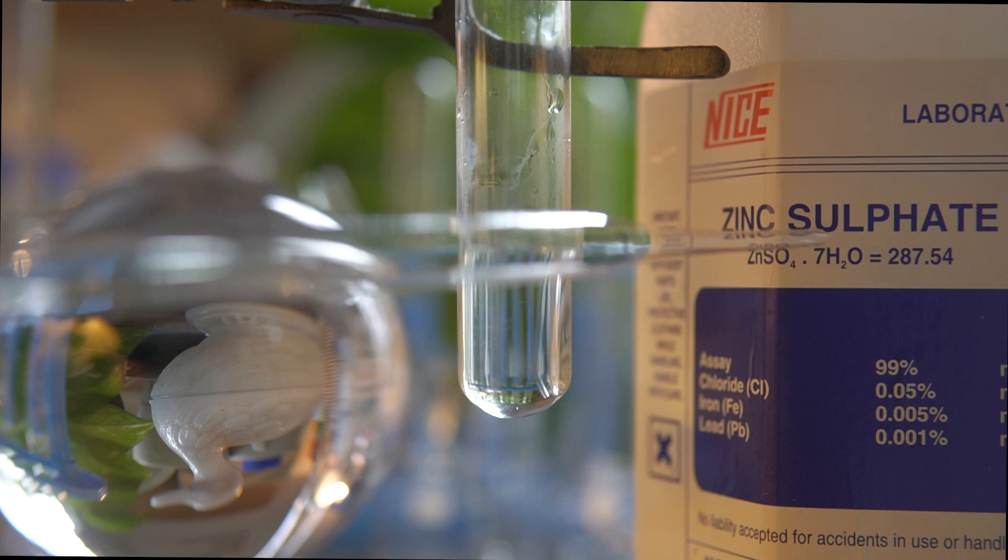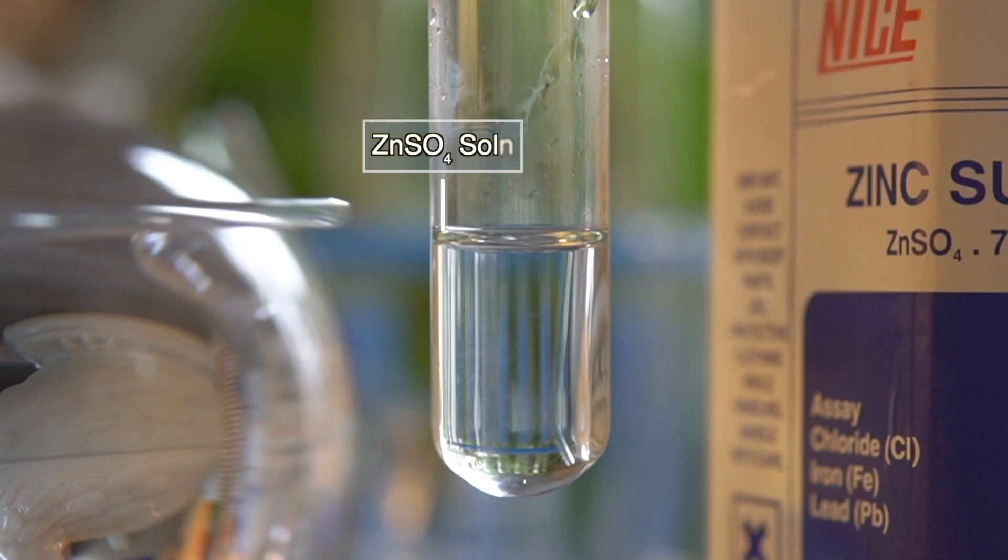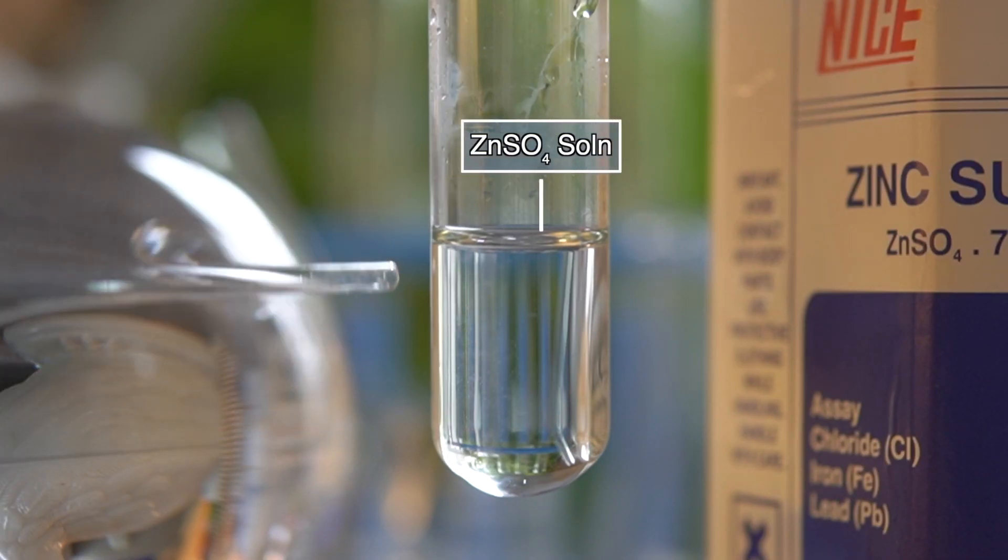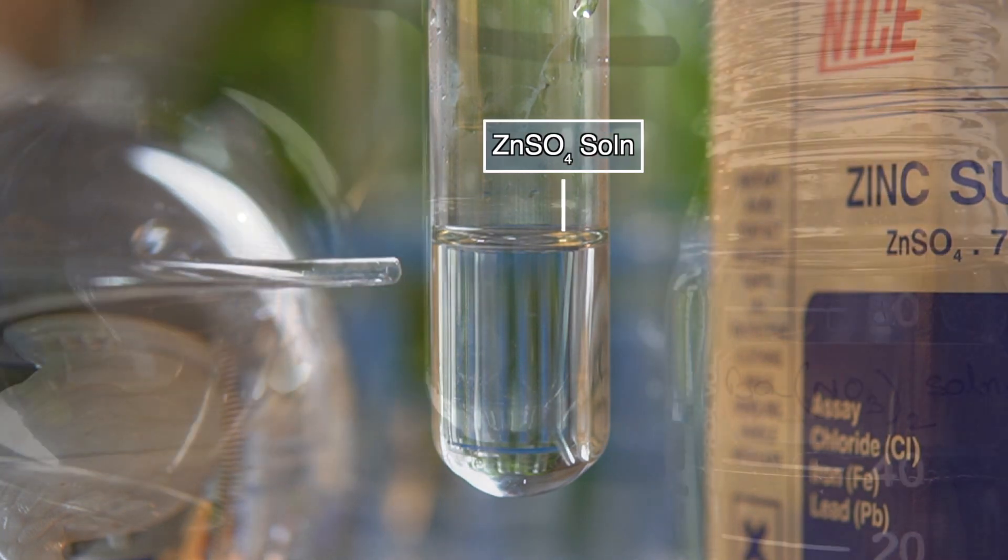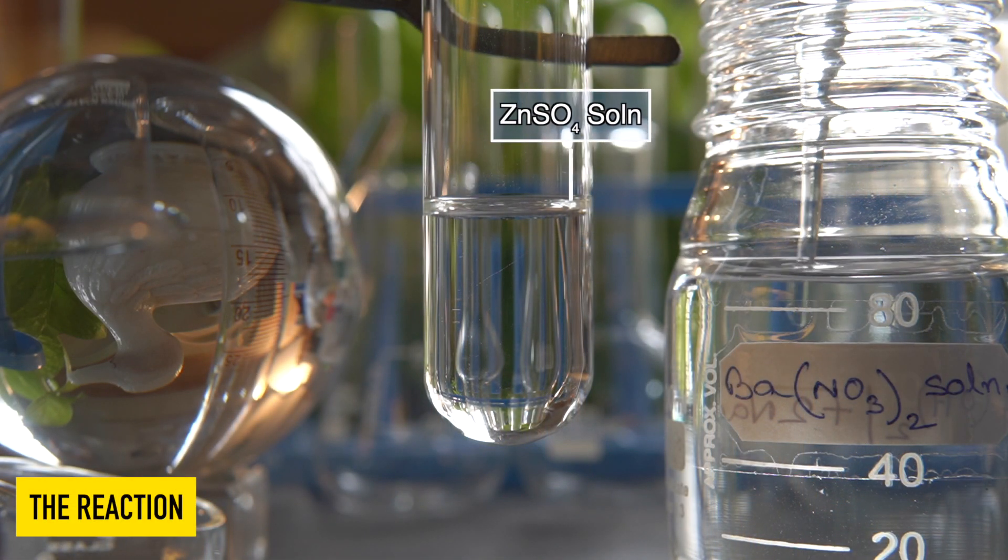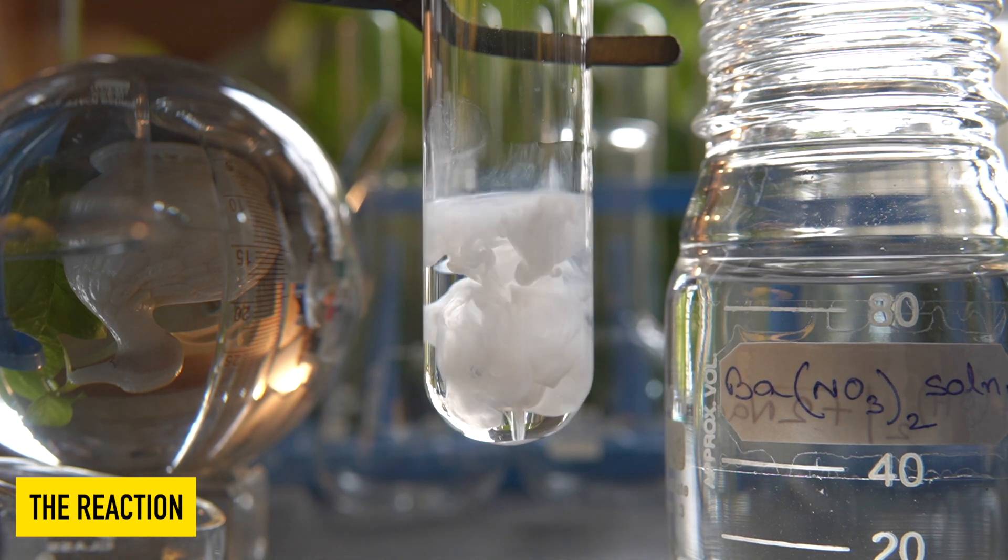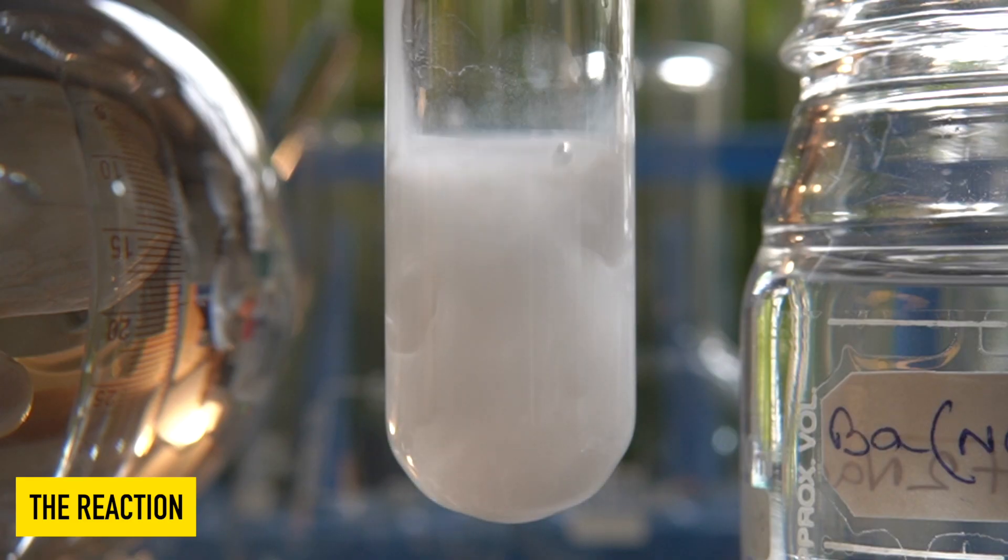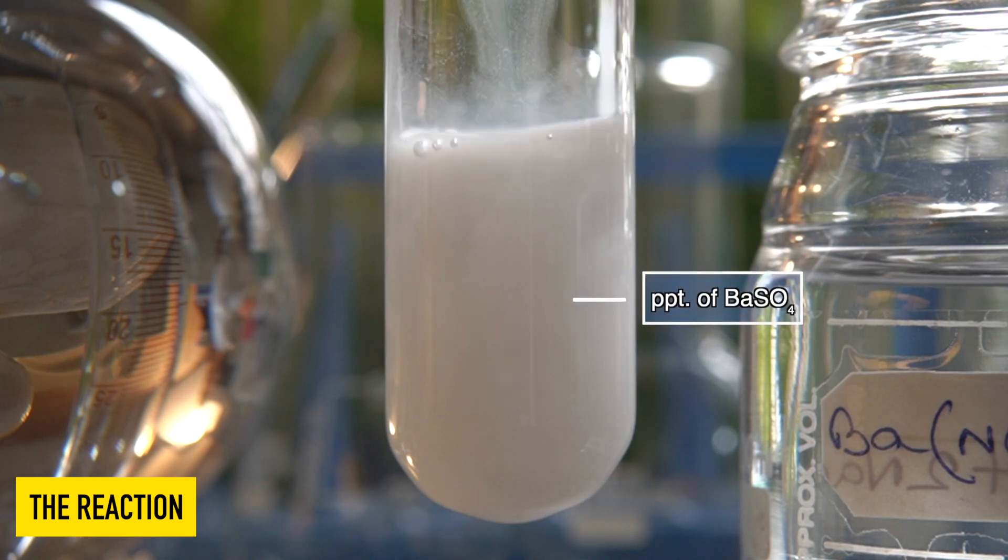To initiate the chemical reaction we will take some clear solution of zinc sulfate into this test tube. Now we will add barium nitrate solution slowly into the zinc sulfate solution dropwise and observe the effects.